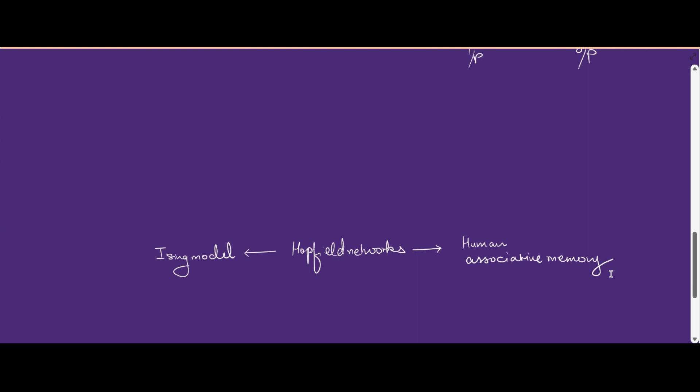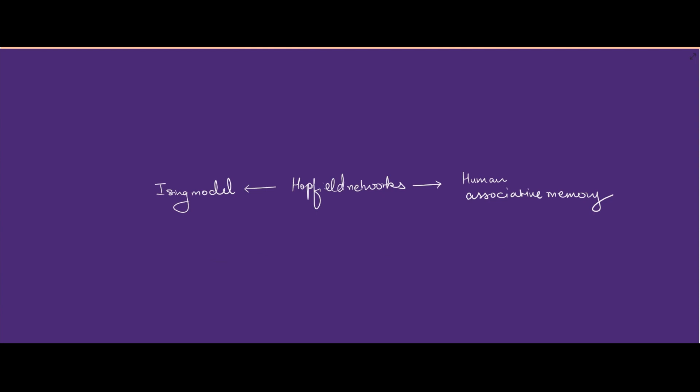This idea came to John Hopfield — he was inspired by the Ising model in physics, which is a model where we have a lattice of spins connected to each other by a coupling strength. John Hopfield connected the idea of the Ising model to human associative memory through Hopfield networks. In later videos we may also explore what are called quantum Hopfield networks and how they could fare better than the classical version.